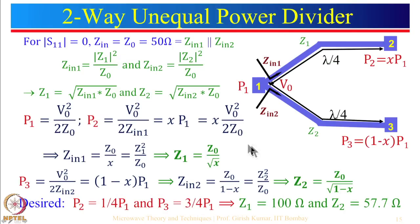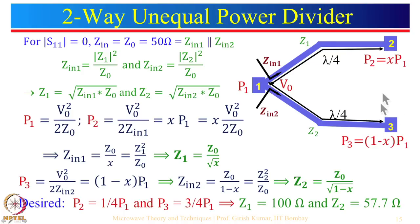Now let us look at the two-way unequal power divider. If we give input power P1, we want P2 = x·P1 and P3 = (1−x)·P1. Adding P2 + P3 = P1, so nothing is reflected and power loss in the network is minimized. Our objective is S11 = 0, meaning the input impedance at that point should be 50 ohm — given by Z_in1 in parallel with Z_in2.